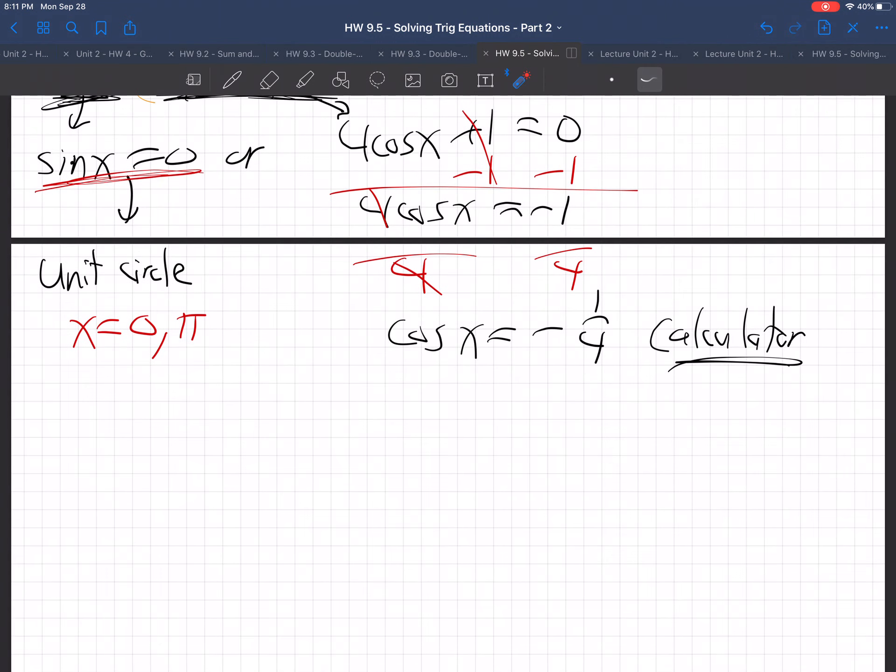So what we do first off, so step 1, we change to positive. Change this to positive. So it becomes cosine x, well here let me keep it with the black color. So it becomes cosine x is positive 1/4th. So change to positive. And then the way to get rid of that to get x alone is you do cosine inverse of both sides. Of positive 1/4th. That cancels out here and gets x alone.